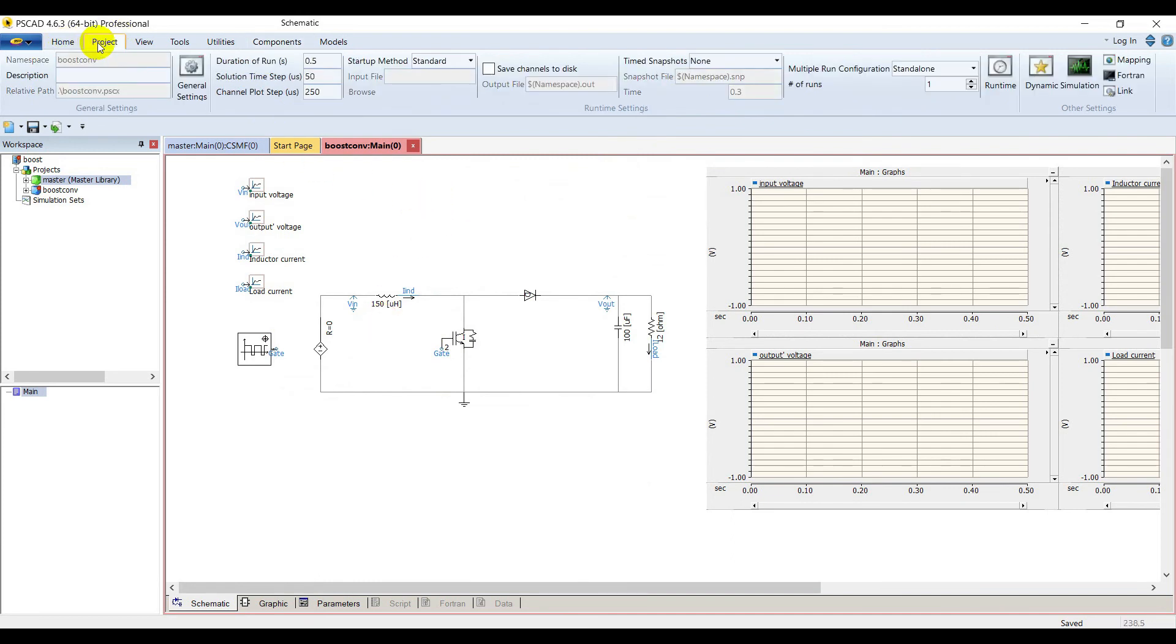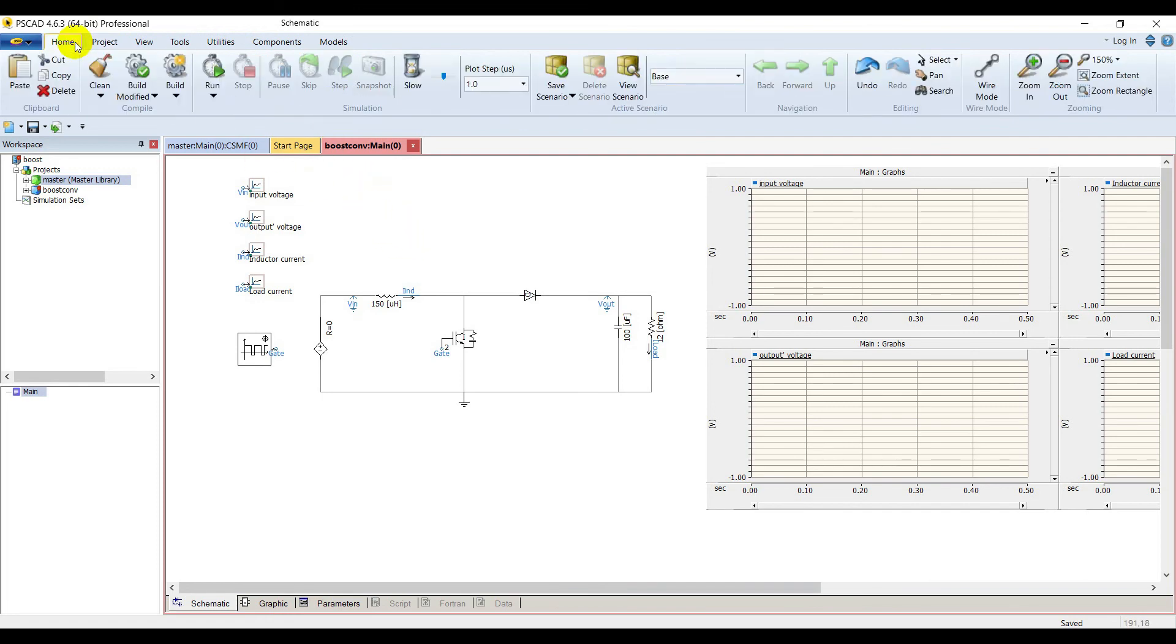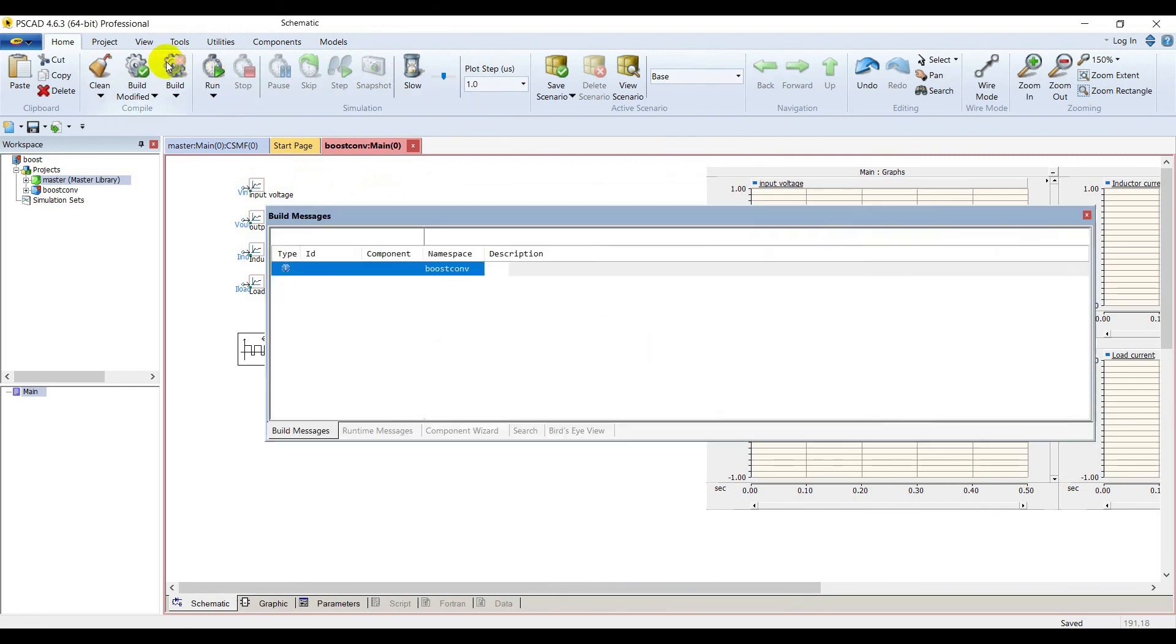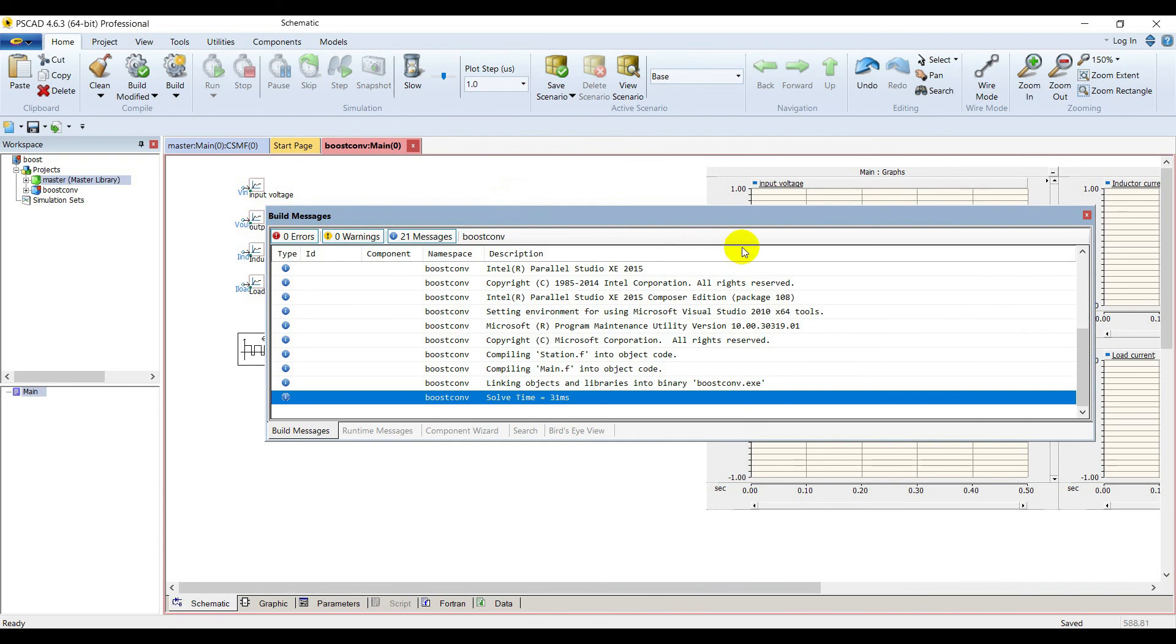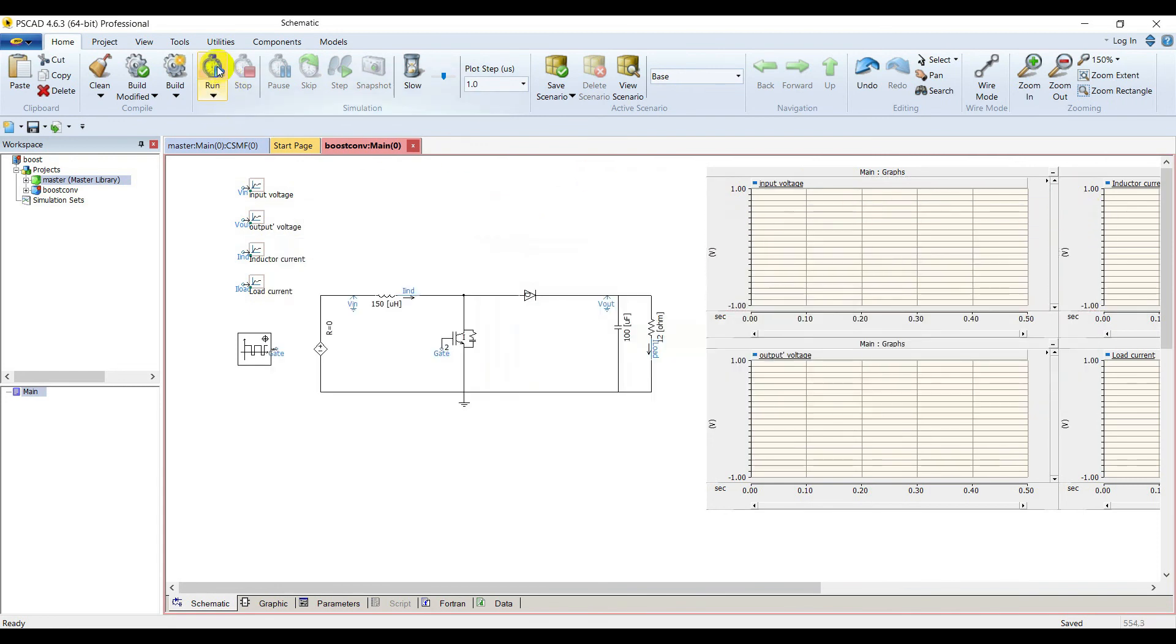Go to project settings. Set duration of run to 100 milliseconds, time step to one microsecond, and channel plot step to one microsecond also. Go to home and build your case. It's successfully built.